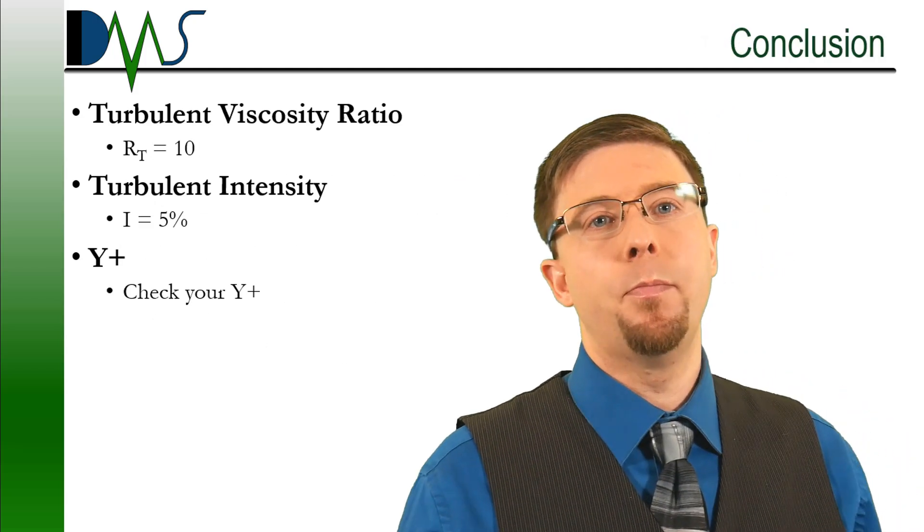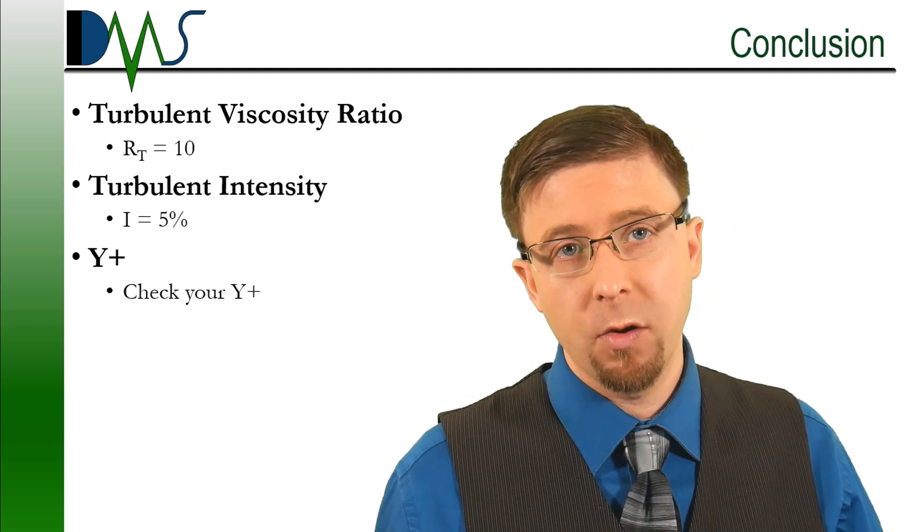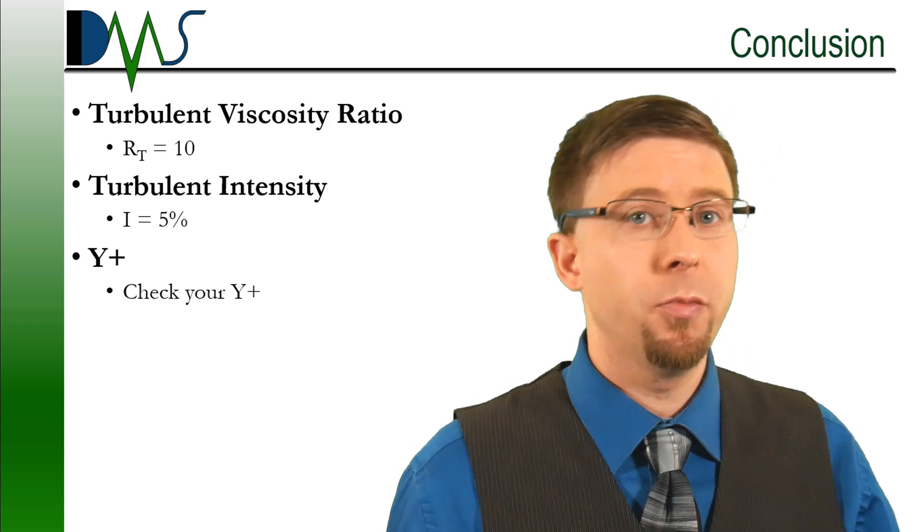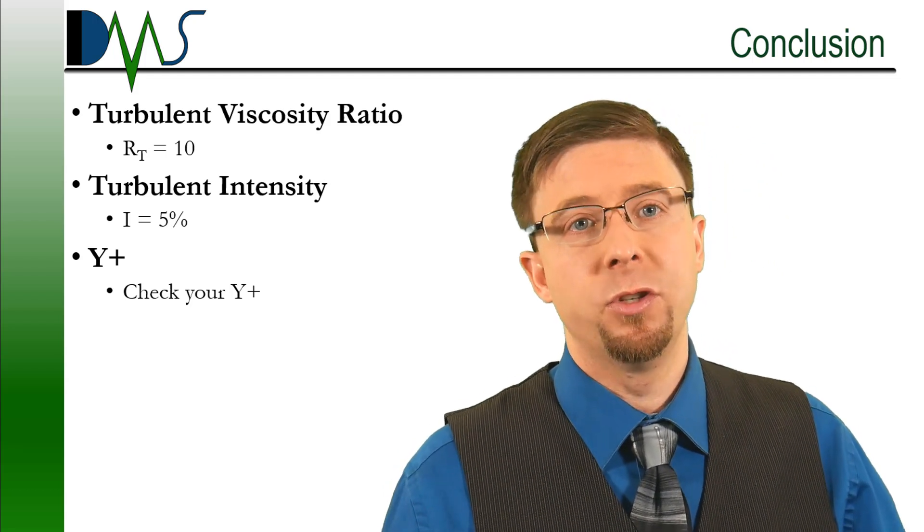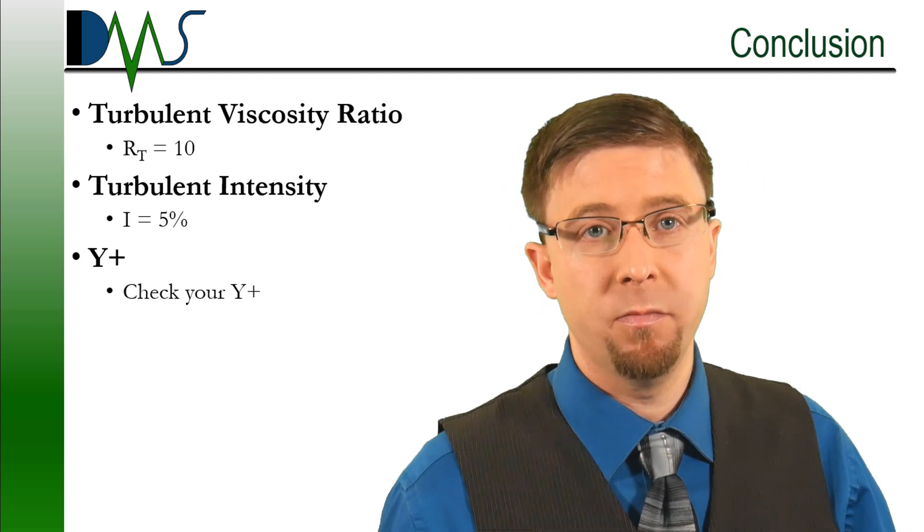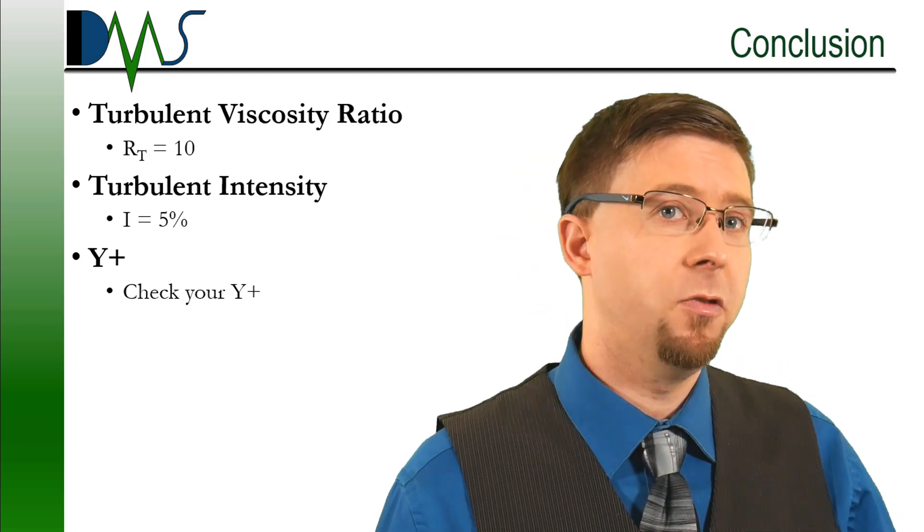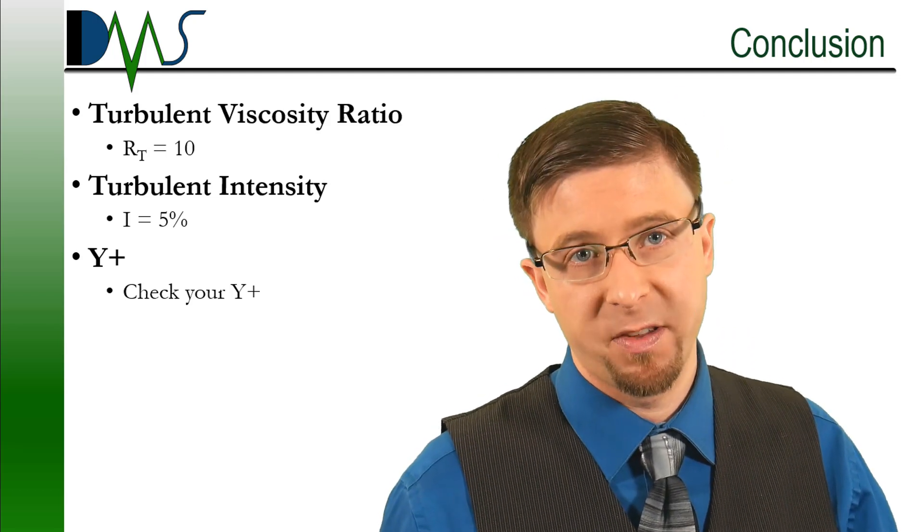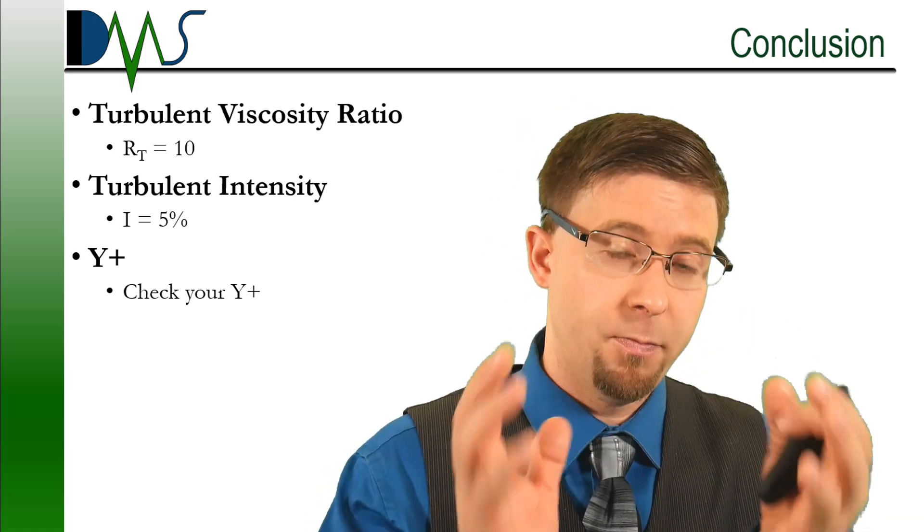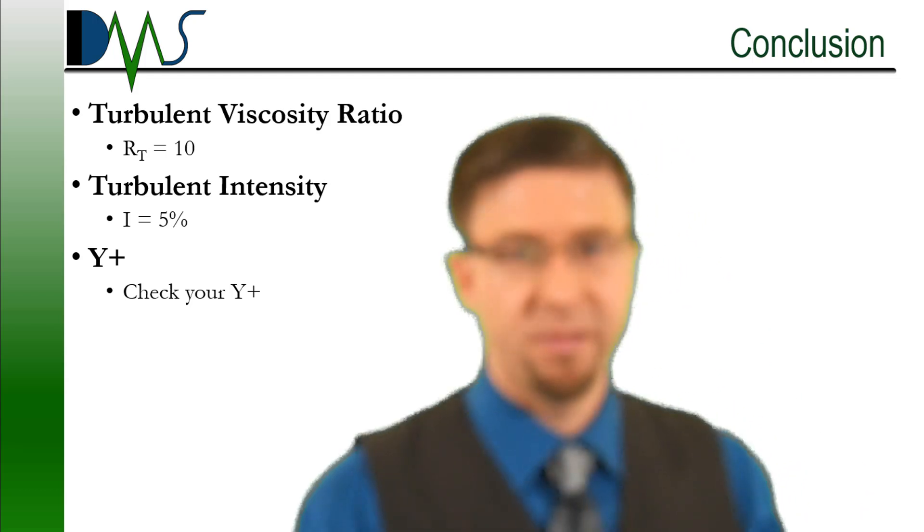So that summarizes up the basics of turbulence modeling for practical CFD modeling. When it comes to specifying your boundary conditions, just remember the two major things is your turbulent viscosity ratio, which is for a medium value, you're looking at around an RT of 10 for medium viscosity ratio, and your turbulent intensity, which for medium values, you're looking for intensity of about 5%. And then when it comes to your wall boundary condition, that is the boundary condition at your object, Y-plus. And check your Y-plus values.